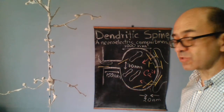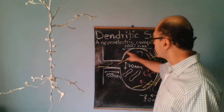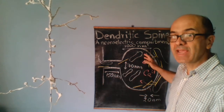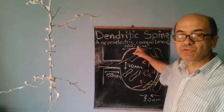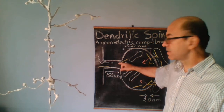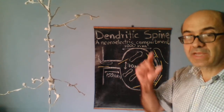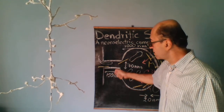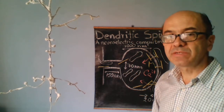The general structure of a dendritic spine is this. We have a head with a diameter of about 1000 nanometers. We have a neck of about 70 nanometers in diameter and 150 nanometers in length.